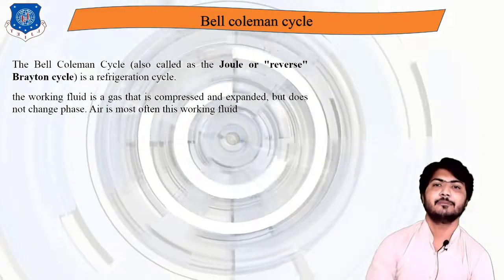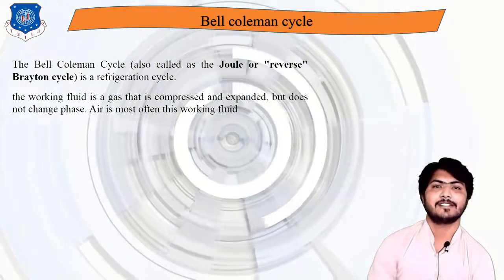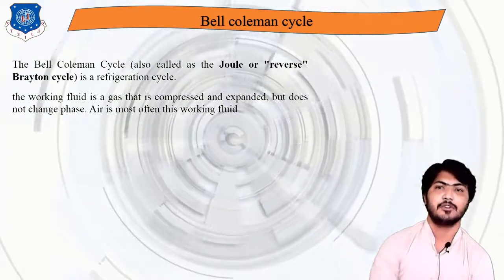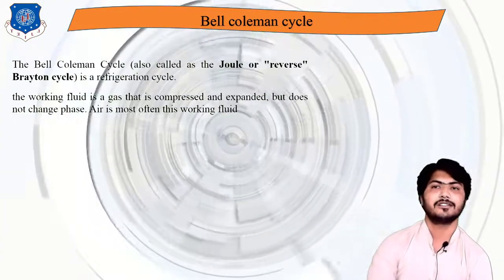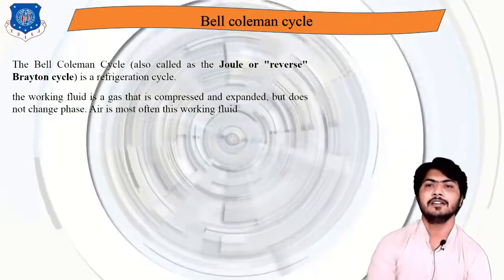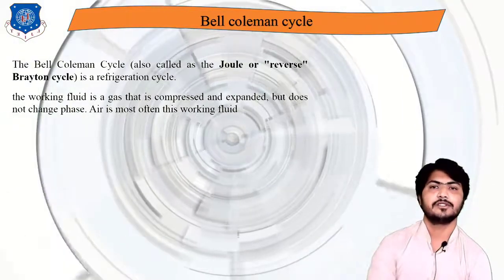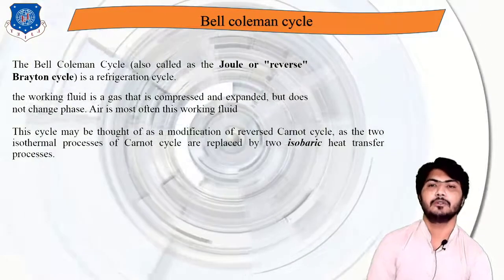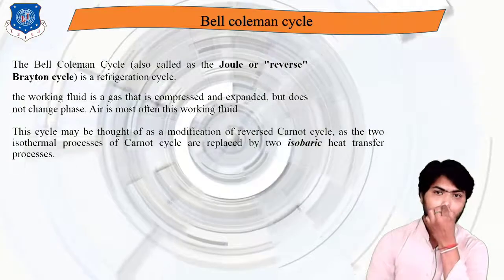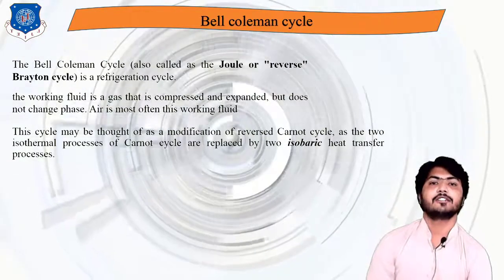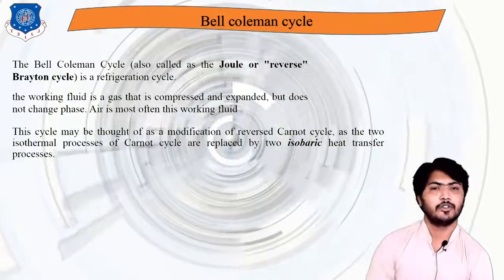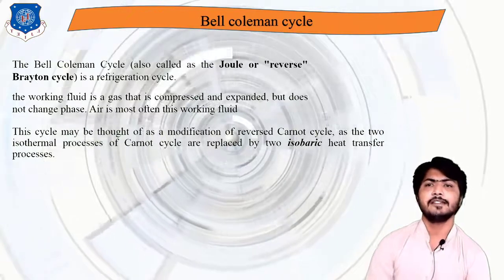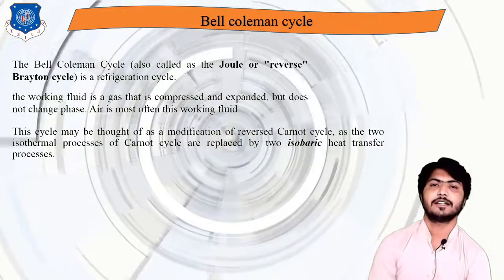In the Bell-Coleman cycle, the working fluid is a gas that is compressed and expanded but does not change phase — air is most often the working fluid. This cycle may be viewed as a modification of the reverse Carnot cycle, where the two isothermal processes are replaced by two isobaric (constant pressure) heat transfer processes.